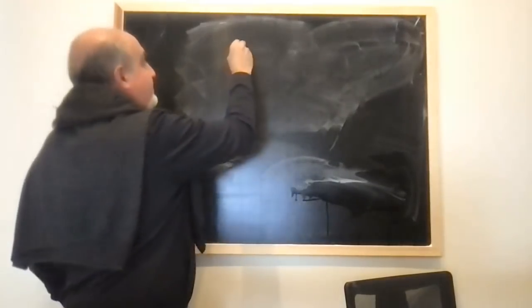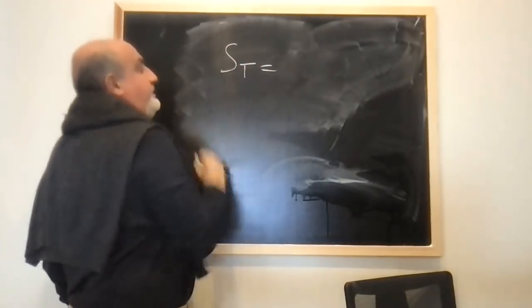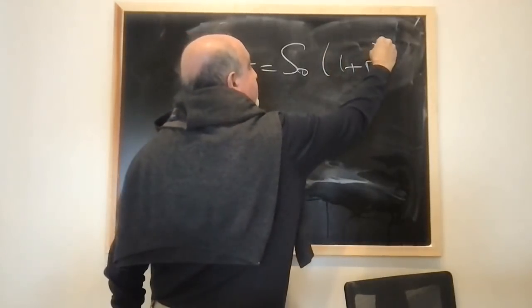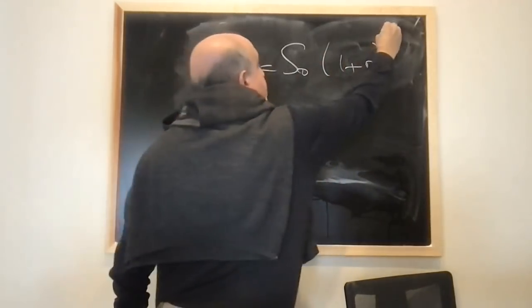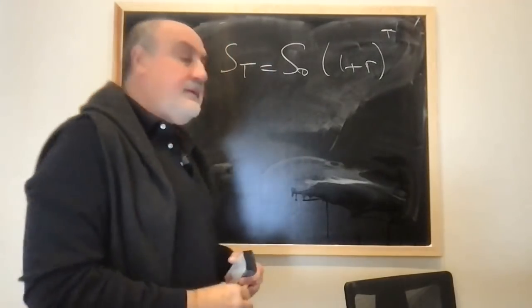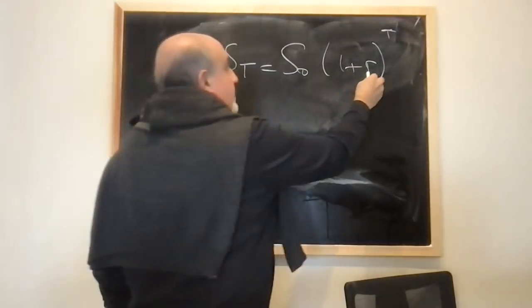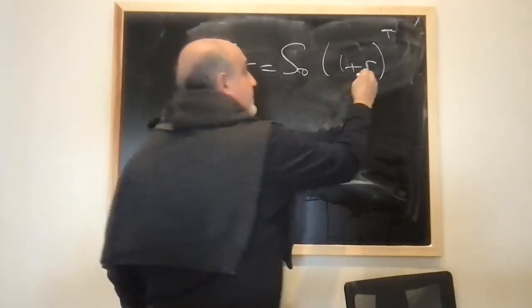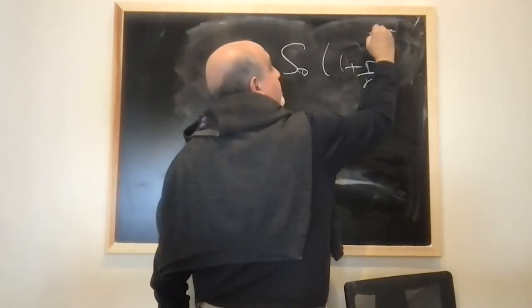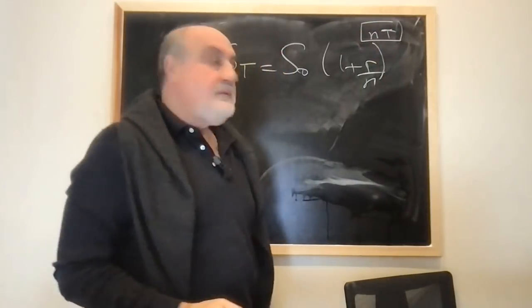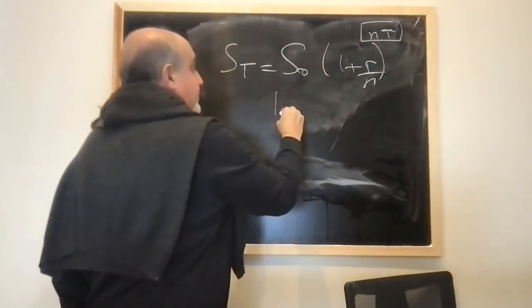Let's say I take a regular compounding model: St equals S0(1+r)^t, t being time. Okay. To get a continuous return, divide this by n, multiply this by n. Okay, and take this to the limit.